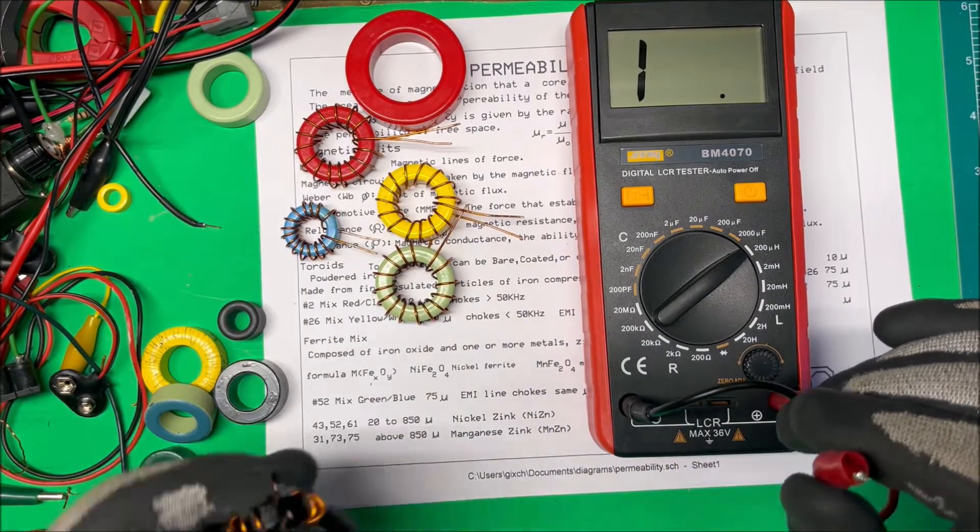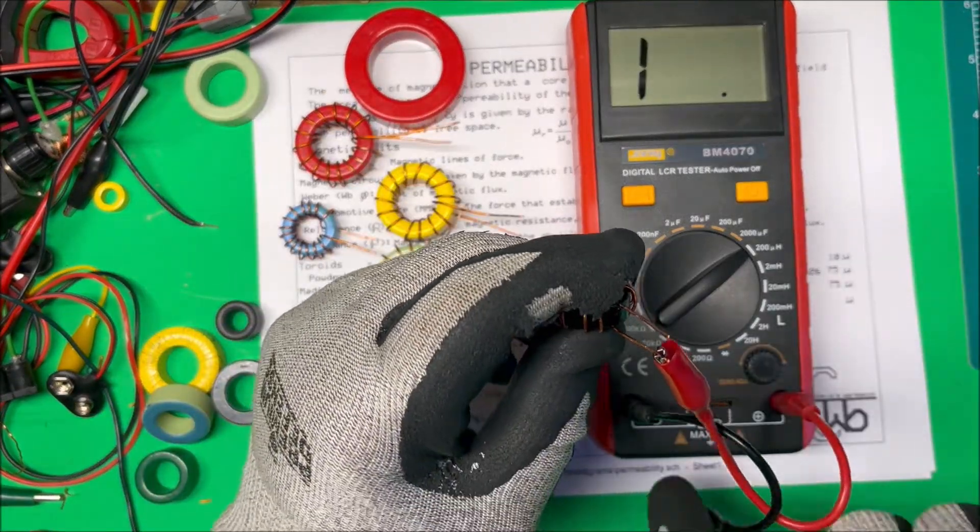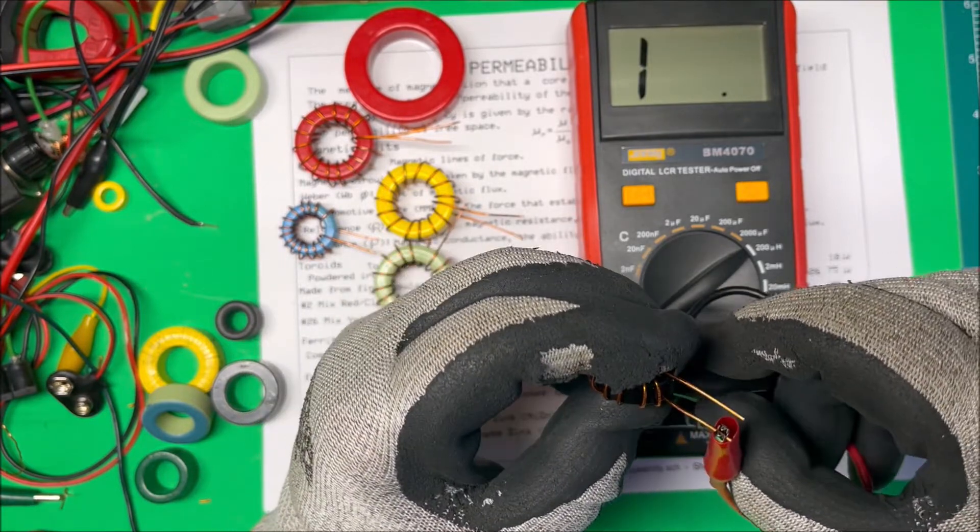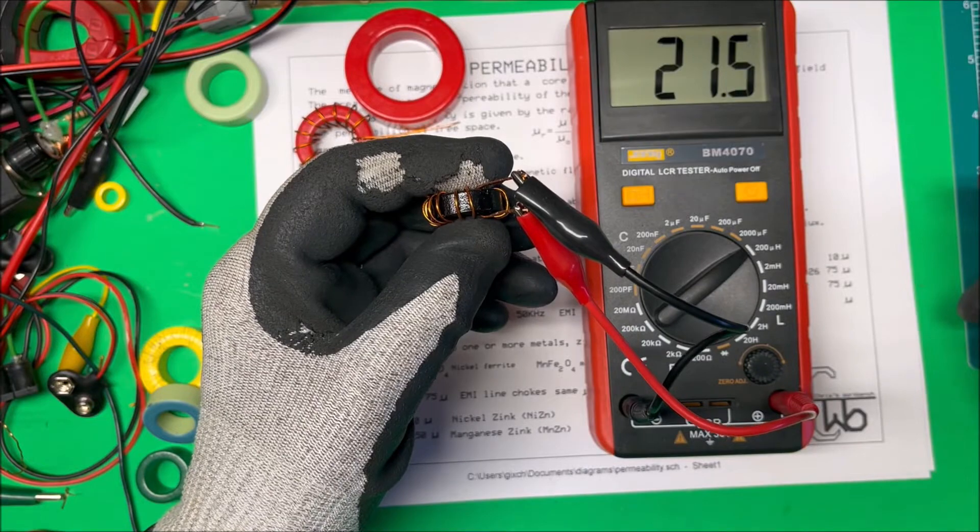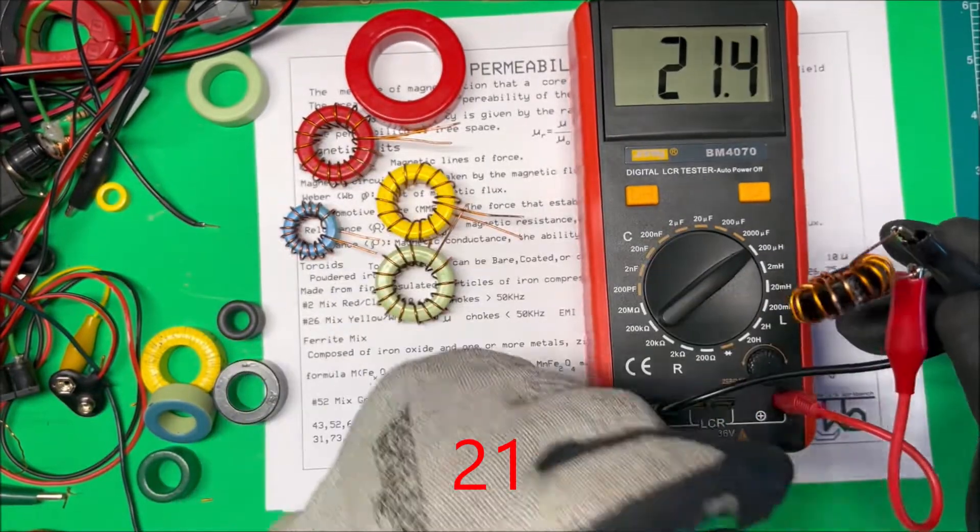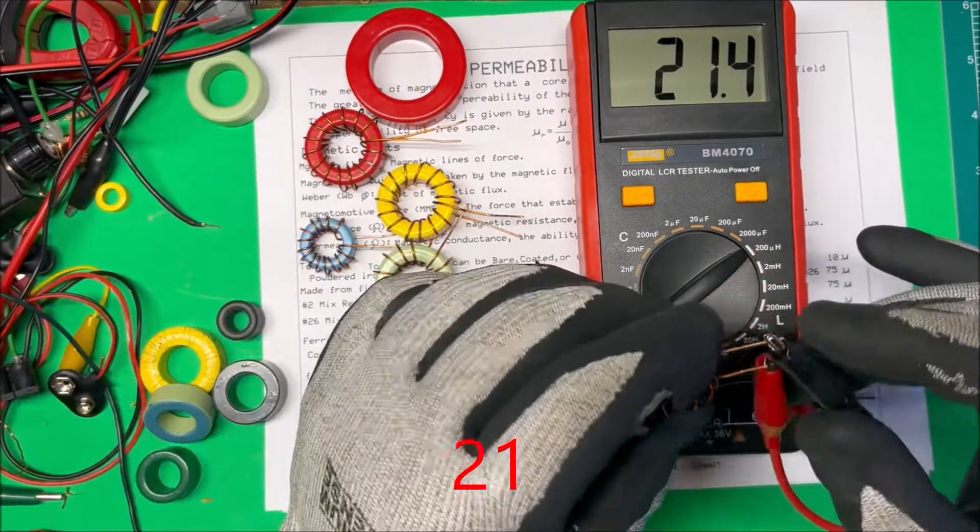And then I have a same size core, but in black, same amount of turns. And that one's 23. So this black one must have a higher permeability than the blue one.